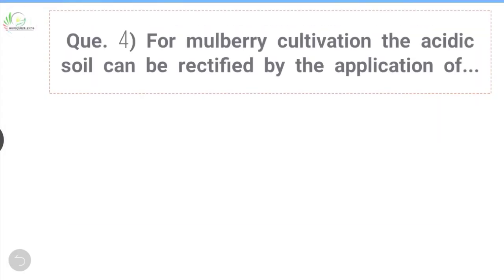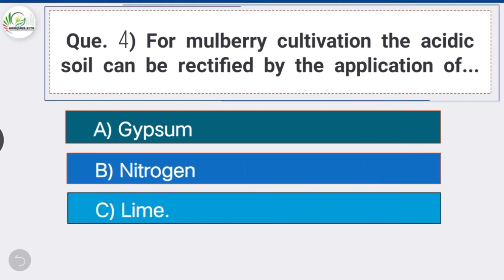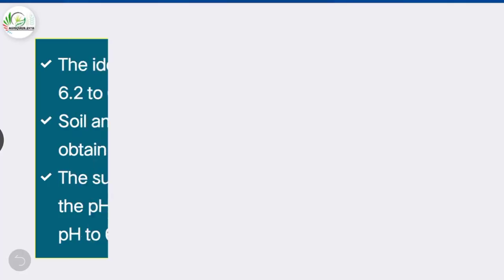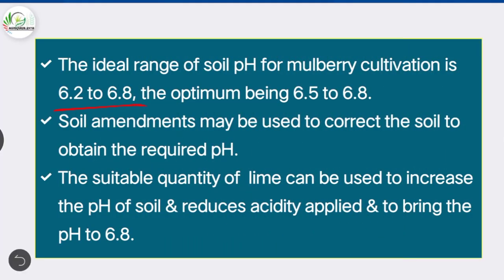Question number four: for mulberry cultivation, the acidic soil can be rectified by the application of — option C is the correct answer — lime. The ideal range of soil pH for mulberry cultivation is 6.2 to 6.8, the optimum being 6.5 to 6.8. The suitable quantity of lime can be used to increase the pH of soil, reduce acidity, and bring the pH to 6.8.